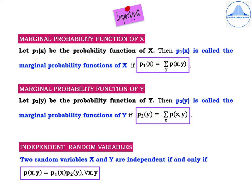I will now explain three more important definitions. The marginal probability function of x: let p1 of x be the probability function of x, where 1 is a subscript. Then p1 of x is called the marginal probability function of x if p1 of x equals summation over y of p of x comma y. Then the marginal probability function of y: let p2 of y be the probability function of y. Then p2 of y is called the marginal probability function of y if p2 of y equals summation over x of p of x comma y. Please observe the summation over y and summation over x for p1 of x and p2 of y respectively.